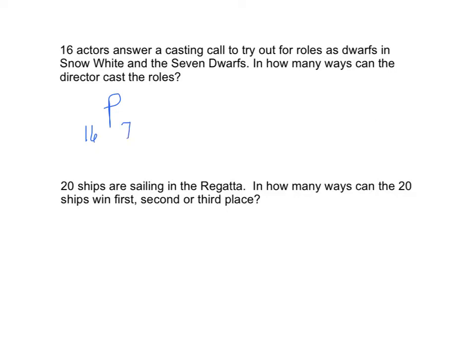So we do N, which is sixteen factorial, over N minus R, which is nine factorial, which would be sixteen times fifteen. This is when you reach for a calculator, thirteen, twelve, eleven, ten. And then I can stop. And when I multiply all those together, I get 57,657,600.